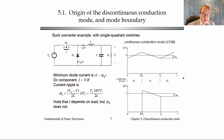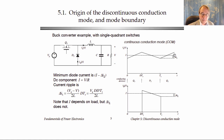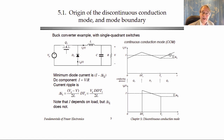Here is an example. We have a basic buck converter with switches realized as conventional single-quadrant switches — a transistor and a diode. Here is what the inductor current waveform looks like in the continuous mode, the waveform we've been drawing throughout this class. It has a DC component labeled capital I, plus switching ripple with a peak magnitude of delta I. We previously analyzed this circuit and know how to calculate capital I and delta I.